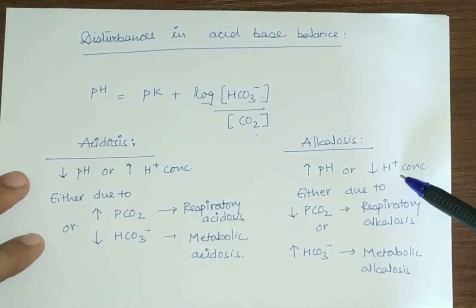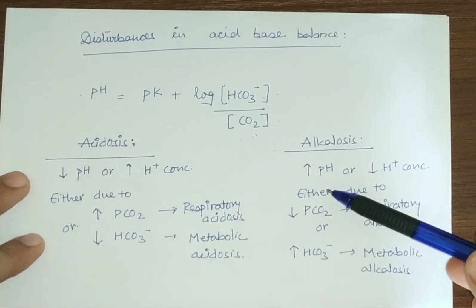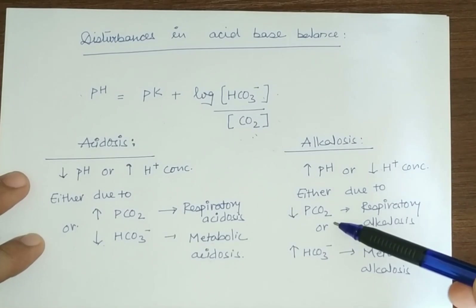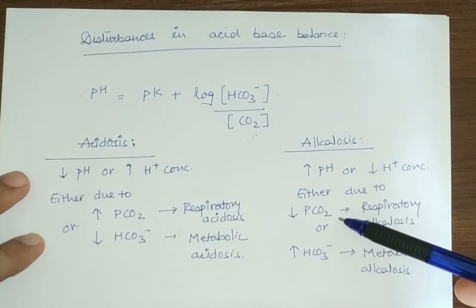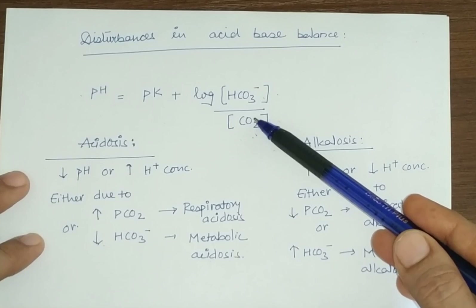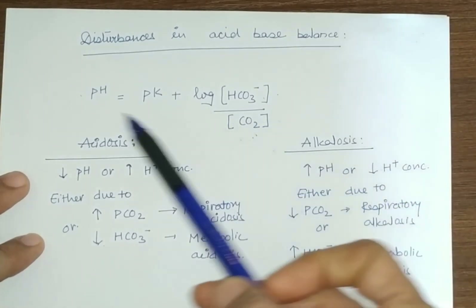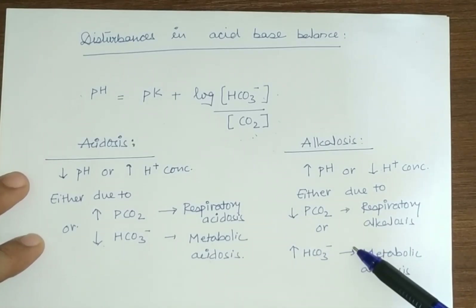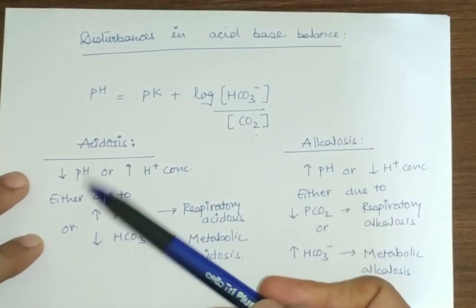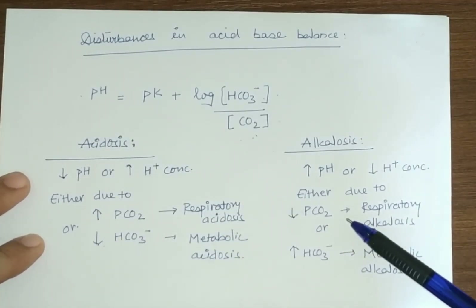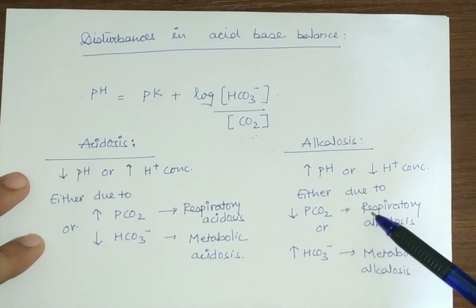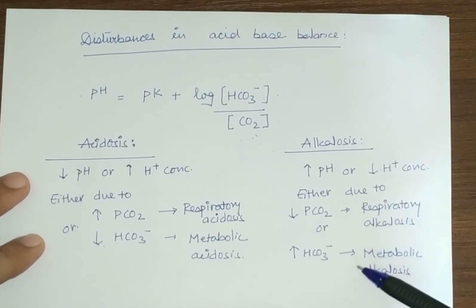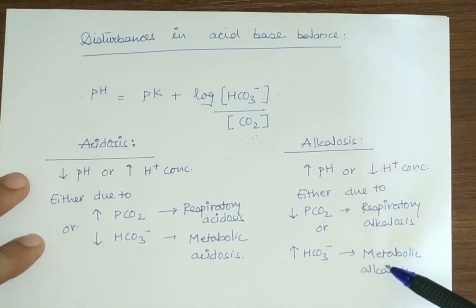In alkalosis, there is an increase in pH. It is either due to a decrease in CO2 concentration — where decreasing CO2 increases pH, making it respiratory alkalosis — or due to an increase in HCO3⁻ ion concentration, which is metabolic alkalosis.